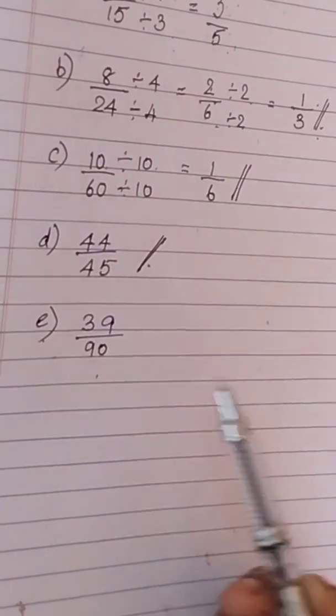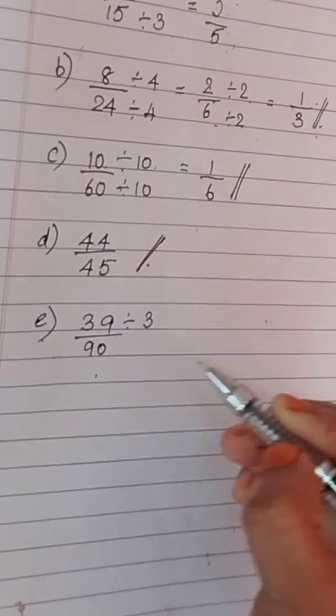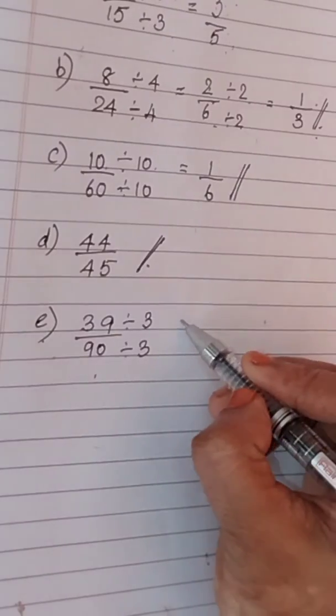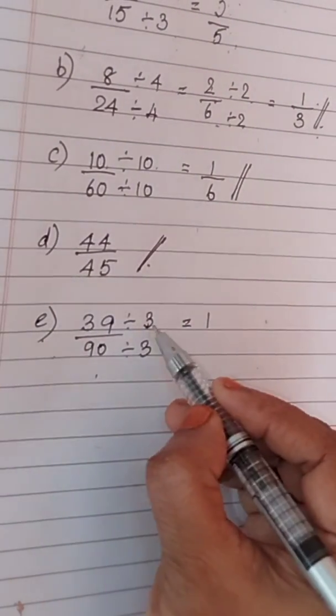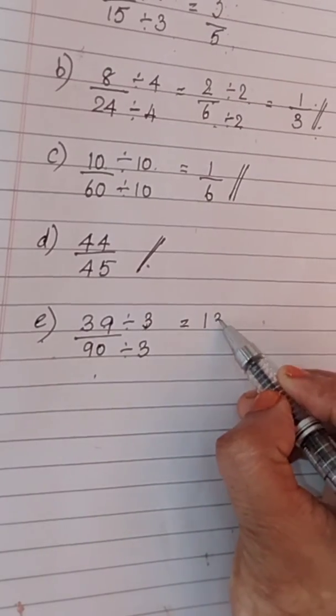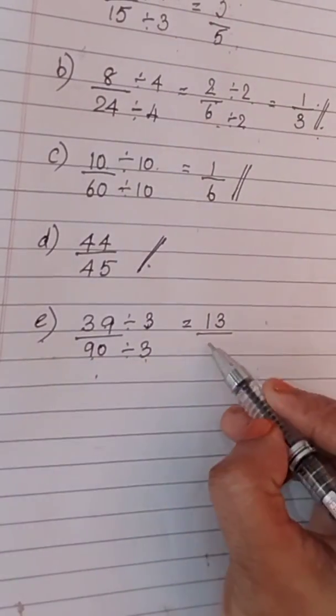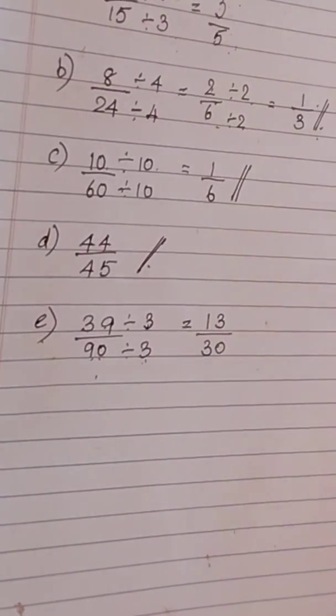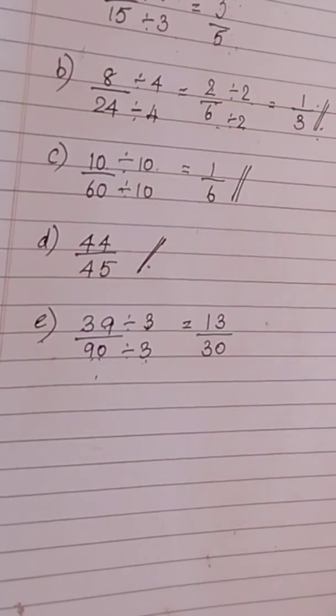Coming to the next question. It is 39 by 90 and both are divisible by 3. 3 13s are 39. Coming to the denominator, 3 30s are 90. Now, it is not possible for us to divide again.